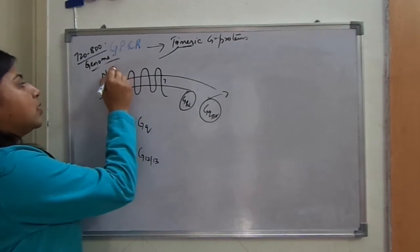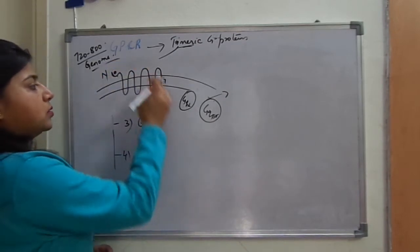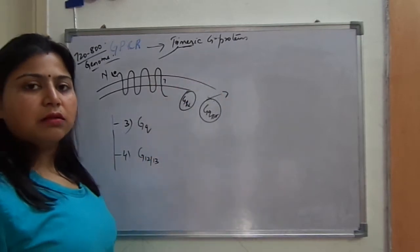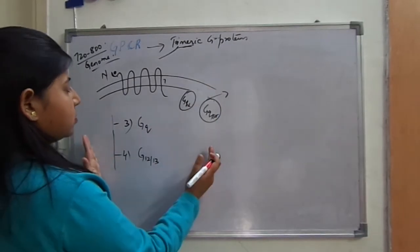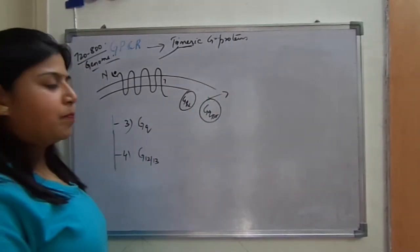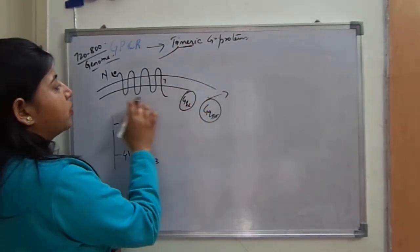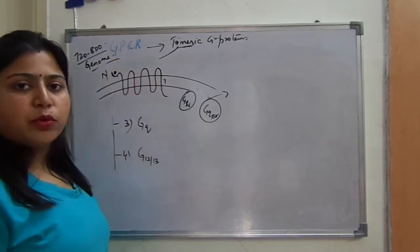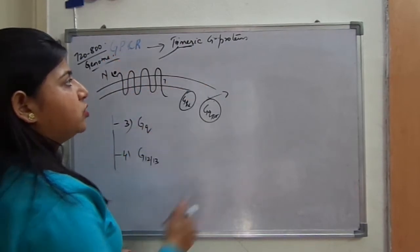Once a signal binds to the N-terminal of the G-protein, the C-terminal activates a cascade of enzymes inside the cell. This is the inside of the cell and this part is the outside. In the last class we discussed the trimeric G-proteins activated by signals coming to these G-protein coupled receptors. There are four classes of trimeric G-proteins.